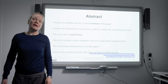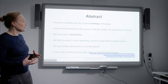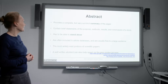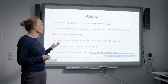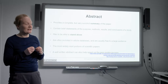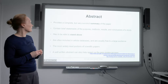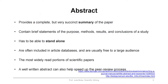So what is the abstract? The abstract is basically a mini paper of your paper. It's a complete but very concise summary of the paper — a very dense summary. It contains brief statements of the purpose, methods, results and conclusions of a study. All of the elements in the IMRAD structure are in the abstract. It has to be able to stand alone. It's often included in article databases and is usually free to a large audience — this is very important, and I'll come to this later.